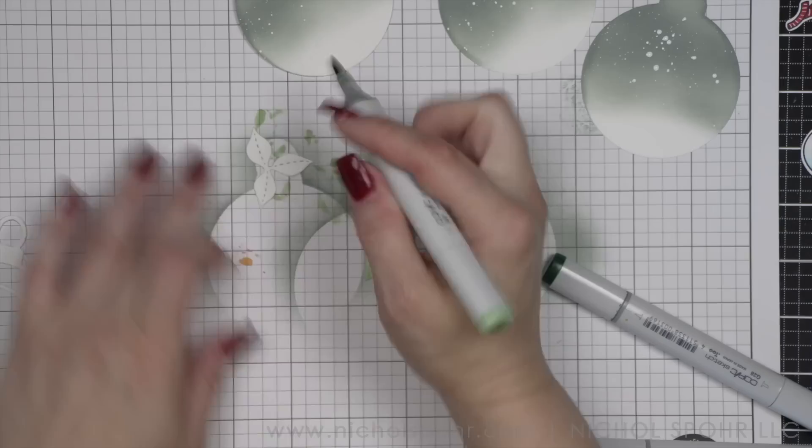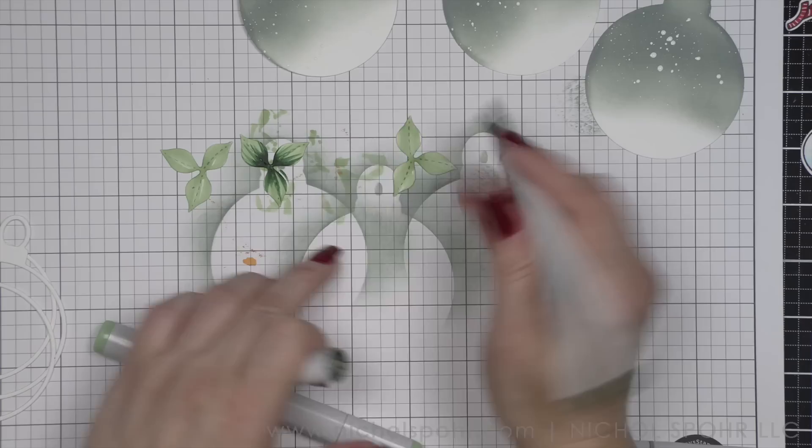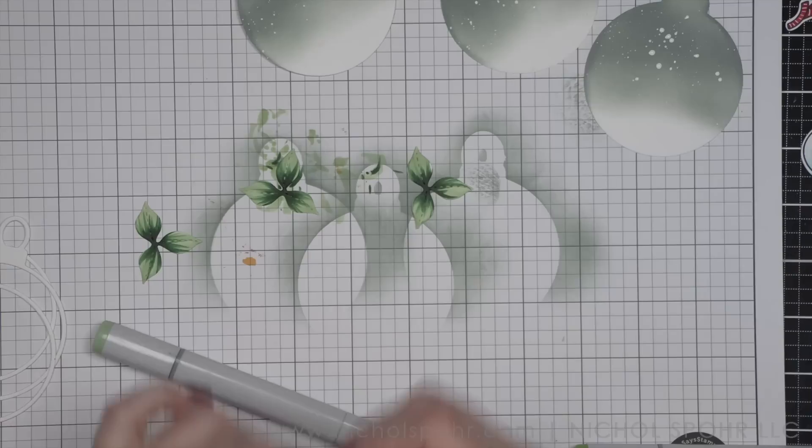While I'm waiting for it to dry, I'm going to take some green markers and I am going to color in these leaves from our set. This is the same set that the ornament comes from. There's also some little berries, but I'm going to use an embellishment for my berries instead of the die cut. And there's a snowflake as well.